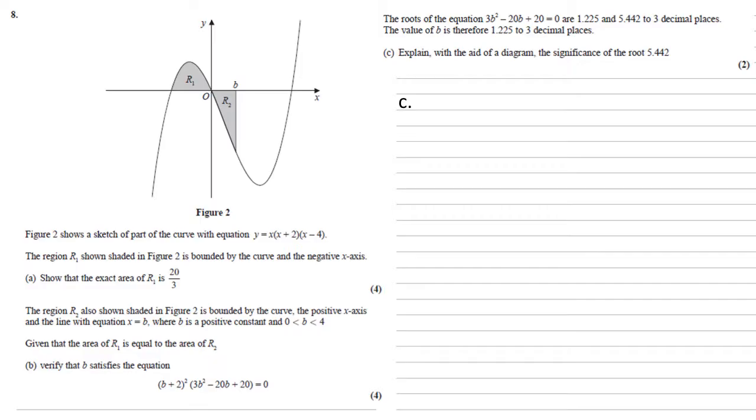For part c, we're told that the roots of the equation 3b squared minus 20b plus 20 equals 0 are 1.225 and 5.442 to 3 decimal places. The value of b is therefore 1.225 to 3 decimal places. We need to explain with the aid of a diagram the significance of the root 5.442.